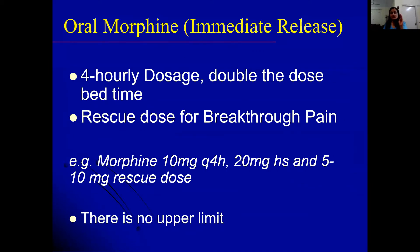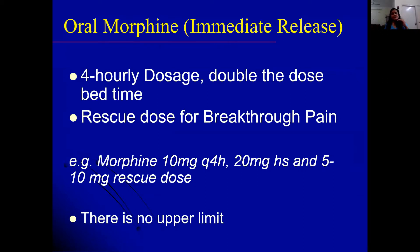Morphine has a duration of action of four hours, so it is given four-hourly. A standard schedule is 6 AM, 10 AM, 2 PM, 6 PM, and 10 PM. Since the next dose would fall at 2 AM, we give double the dose at bedtime — the 10 PM dose is doubled — so the patient does not need to wake up at 2 AM. This is the standard prescription approach.